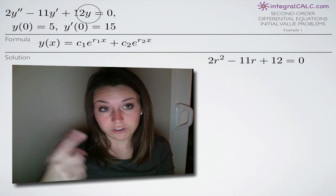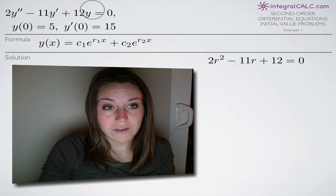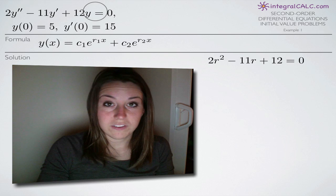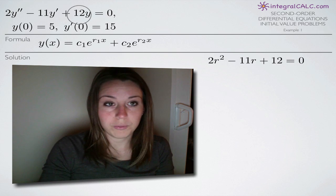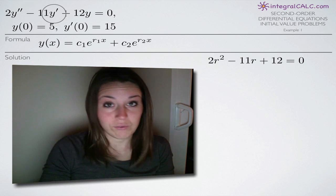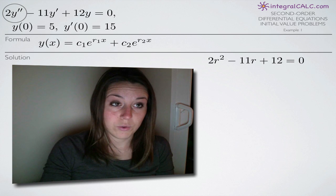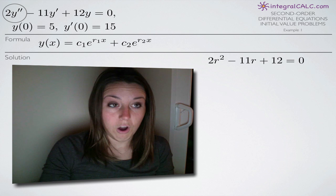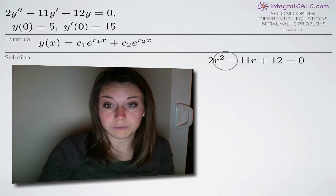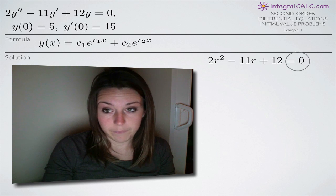The easiest way to remember is to count the hash marks on the y's. Zero hash marks means r to the zero, which is 1, so we multiply 12 times 1 and get 12. Y prime has one hash mark, that's r to the 1, which is just r. Y double prime has two hash marks, that's r squared. It's a simple trick to remember what is 1, what's r, and what's r squared when plugging into the equation.